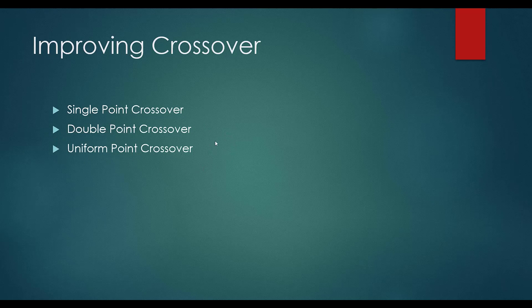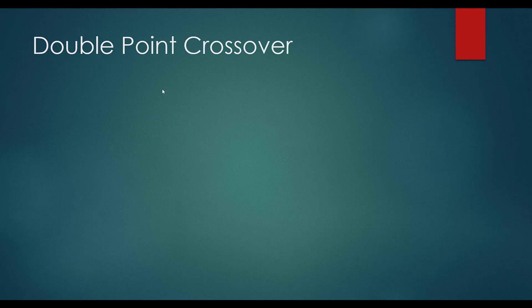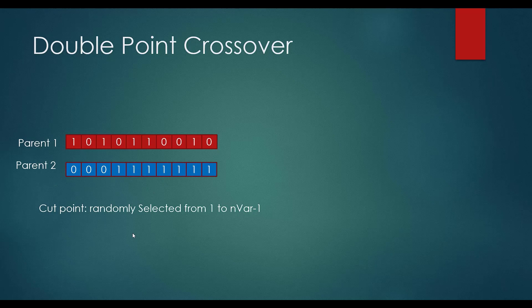Let's take a look at these types of crossover. The first one is double point crossover. For single point crossover we have one cut point, and here we have two cut points. Suppose that we have parent one and parent two with their solution representations. The cut points are randomly selected from one to n minus one, meaning we cannot select the last variable.